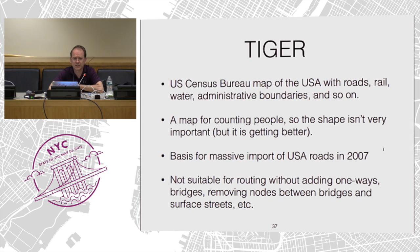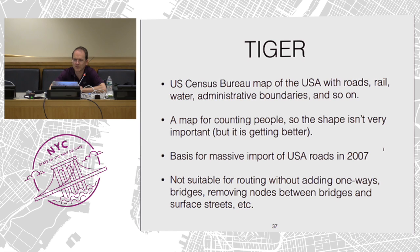That brings me to a quick digression on Tiger. Tiger is the Census Bureau's map of the US with roads, rail, and all sorts of things, but it's a map for counting people. Geometry is kind of an afterthought as long as you're kind of close, and everybody's happy at Tiger. It was used as a massive import in 2007 and it's the basis for everything we're doing in the US, but a lot of it has been reworked. Some areas did not use Tiger — they used Massachusetts GIS, for example. It's not suitable for routing without doing a lot of things like adding on-ways, bridges, and removing nodes that allow you to tunnel through a bridge onto a surface street.